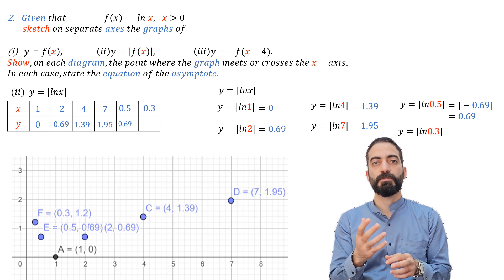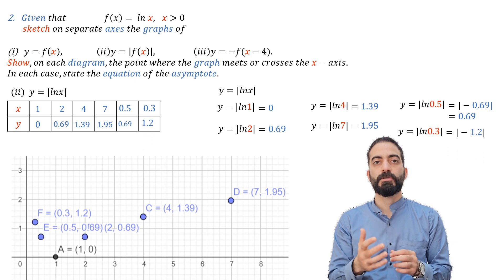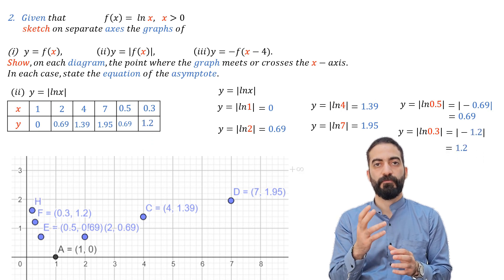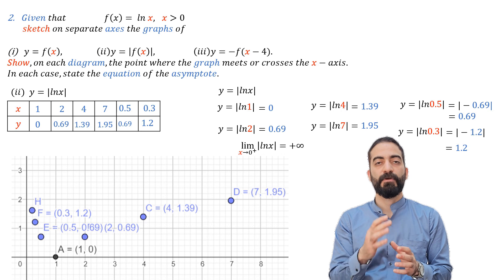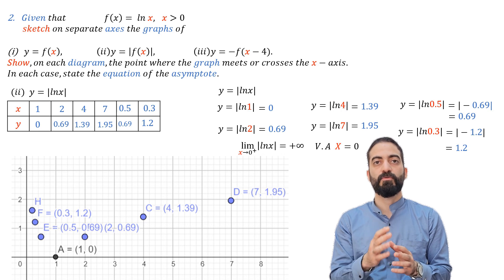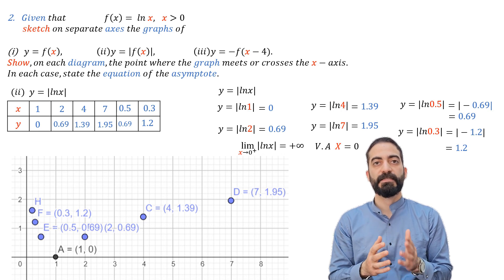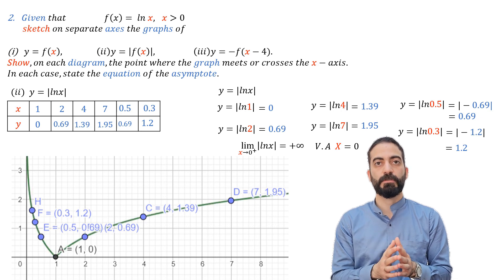And also we have the limit of absolute value of ln(x) when x tends to 0 plus equal plus infinity. This means that x equals 0 is a vertical asymptote.